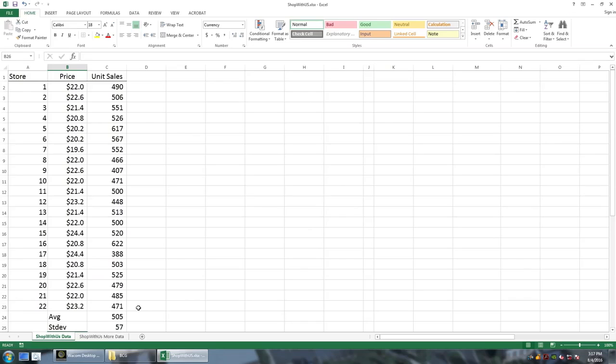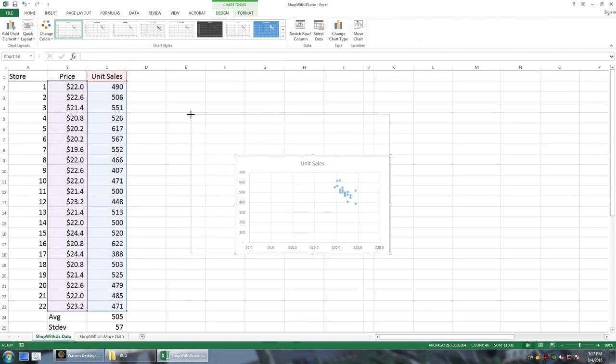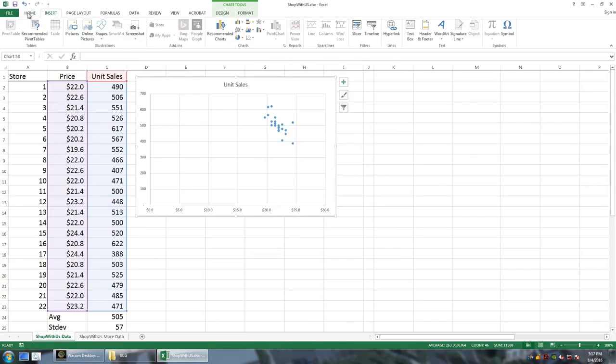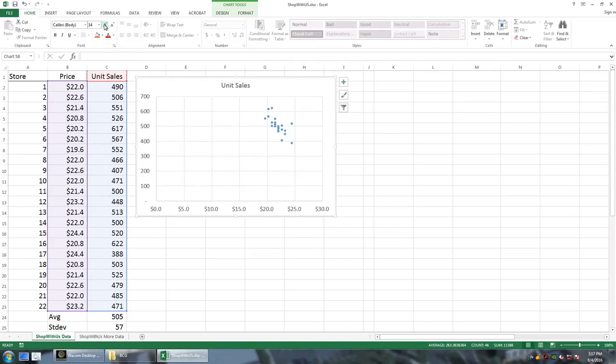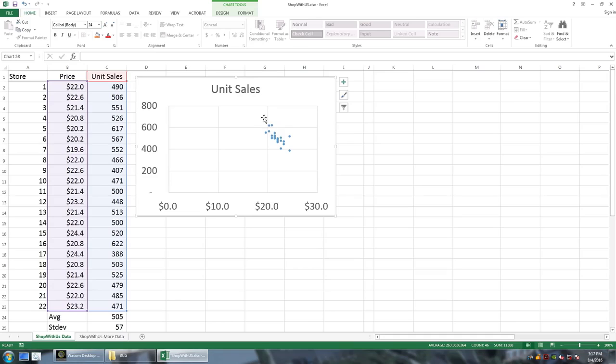The first way to investigate a relationship is to look at a scatter plot. I'm going to use Excel to do this. I'm going to highlight the two columns of price and unit sales. And I'm going to go in and insert a scatter plot. Let me try and make this as large as I can and increase the font.